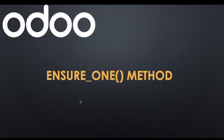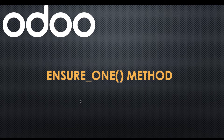In this discussion you will get information about the ensure_one method. If you missed the previous discussion about the exists method, the link is given in the description. Using this ensure_one method, you don't need to override it. If you are working with a single record set at a time, this method will be used. If you have a multiple record set or no record set, this method will raise a singleton error.